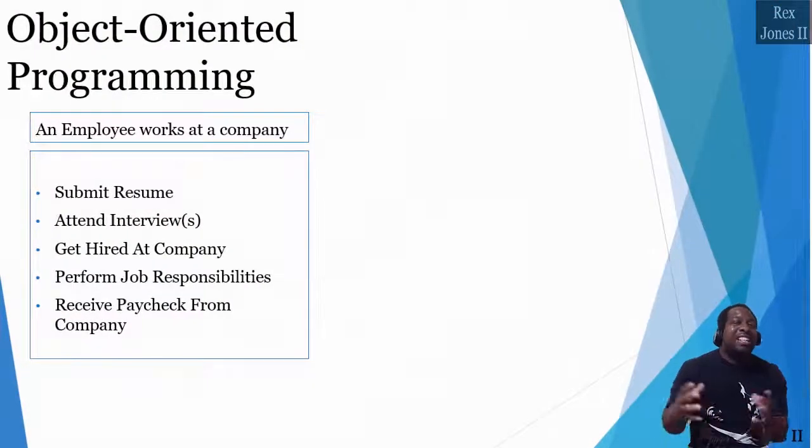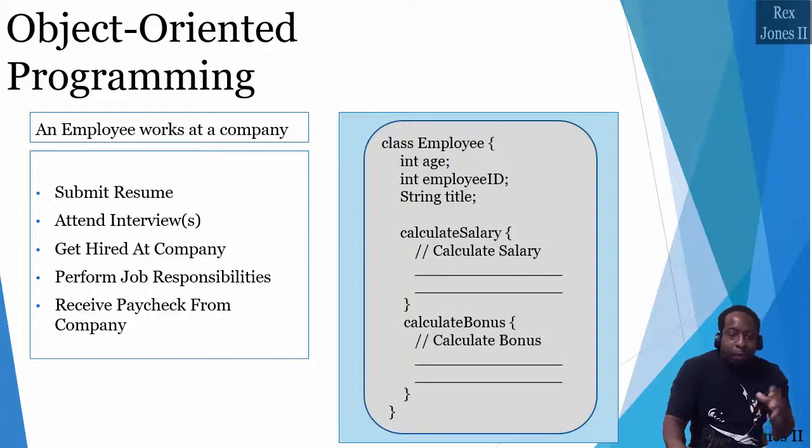Object-oriented programming is different. With this same example of an employee working at a company, our program has a class called employee. It's organized around data and the data controls access to the code.